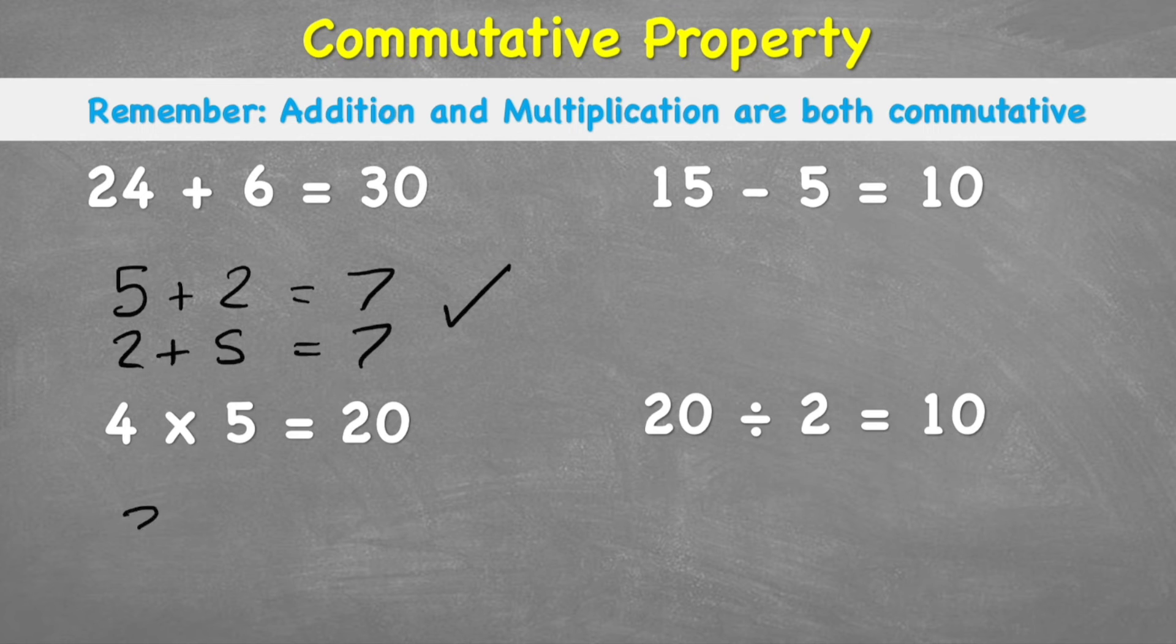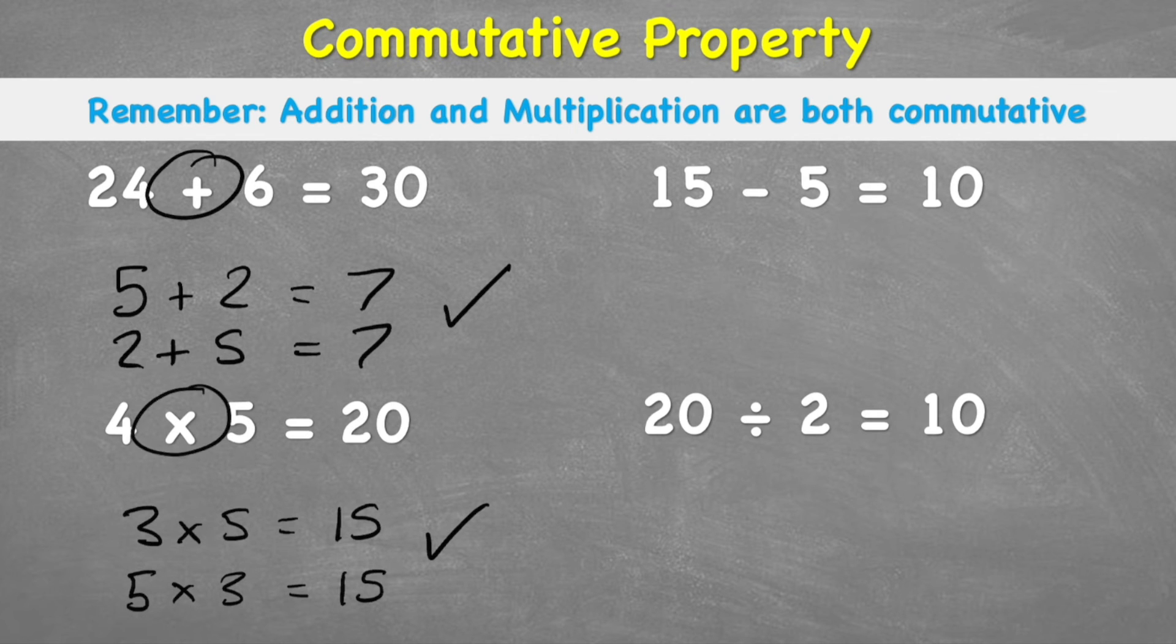Let's do a multiplication. 3 times 5 equals 15. Switch them around. 5 times 3 also equals 15. Awesome. So we can confirm addition and multiplication are definitely always commutative.